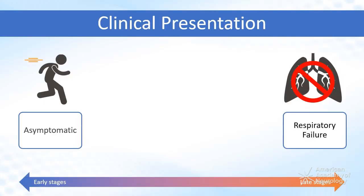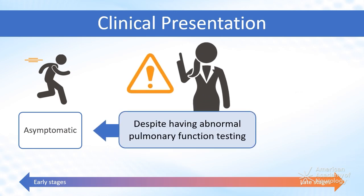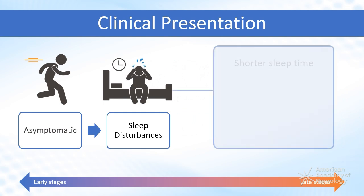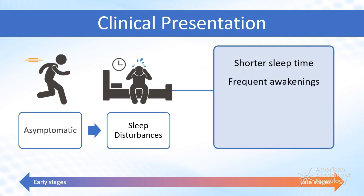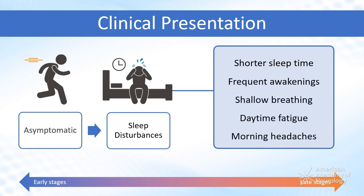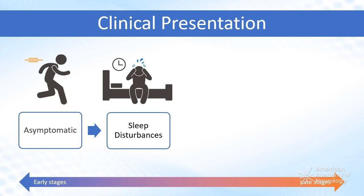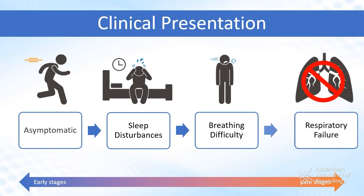The clinical presentation of respiratory muscle weakness ranges from being asymptomatic in the early stages to severe respiratory failure in the late stages. Despite having abnormal pulmonary function testing, patients can be completely asymptomatic at first. The first symptoms a patient typically experiences are sleep disturbances manifesting as shorter sleep time, frequent awakenings, shallow breathing, daytime fatigue, and morning headaches. Patients experience these symptoms more often in their sleep because of reduced respiratory drive, particularly during REM, rapid eye movement sleep, when muscle atonia is present. In later stages, patients start to experience difficulty breathing in the daytime and eventually progress to respiratory failure.